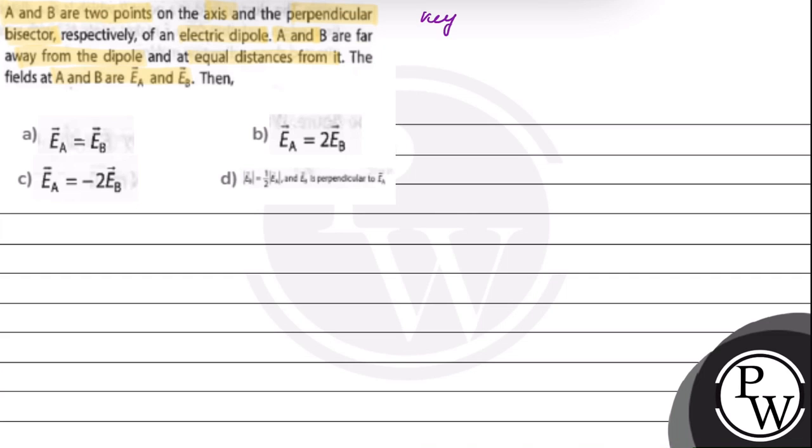In this question, the key concept is electric field due to a dipole. A dipole is an arrangement of equal and opposite charges, which are separated by a small distance d. These charges are point charges.